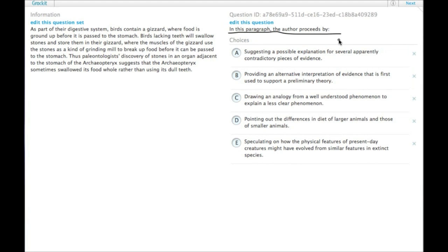So in this paragraph, the author proceeds by—proceeds by means what's the method of the argument. So we have birds contain a gizzard where stones go and then grind up food. That's the first part, then from that information...